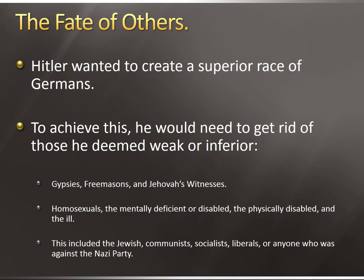Hitler wanted to create a superior race of Germans, so to achieve this he targeted those he deemed weak or inferior. This included Gypsies, Freemasons, Jehovah's Witnesses, homosexuals, the mentally and physically disabled, the terminally ill, Jewish people, Communists, Socialists, liberals — those more open to different people and ideas — and anyone who stood against the Nazi party or was not willing to accept Hitler and his beliefs.